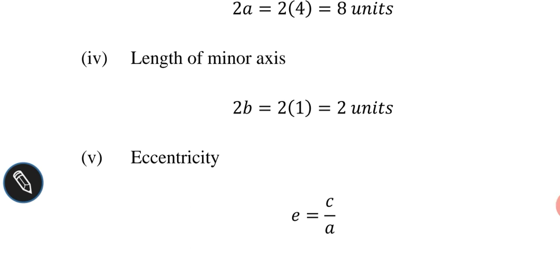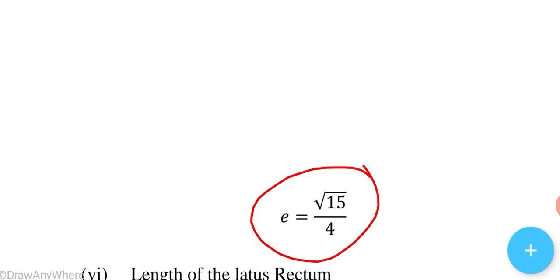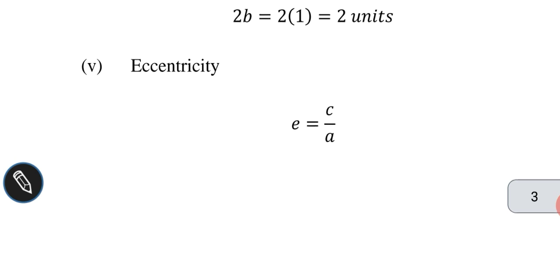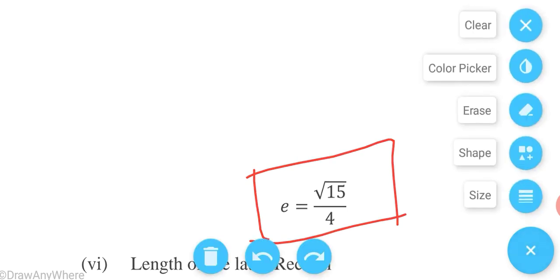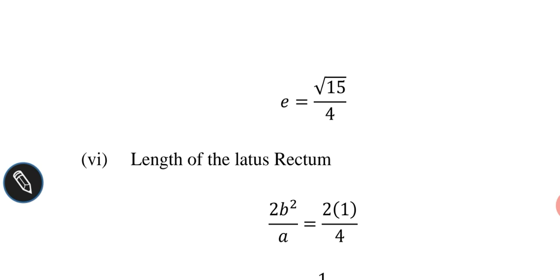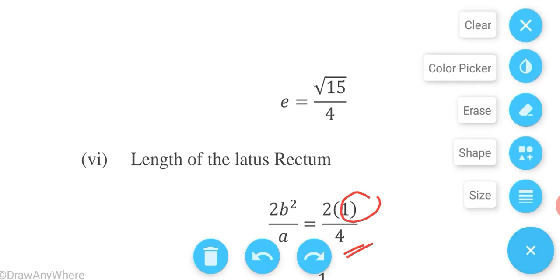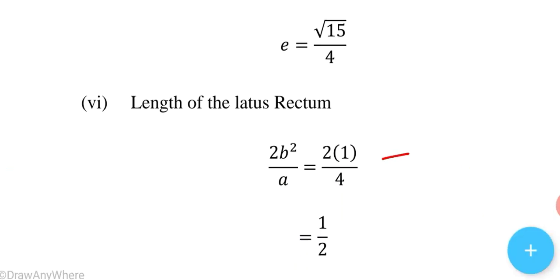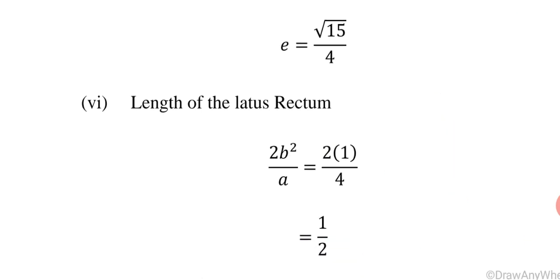The eccentricity is e = c/a. Note that we do not use ± for eccentricity. So e = √15/4. The length of the latus rectum for an ellipse is 2b²/a = 2 × 1 / 4 = 2/4 = 1/2 units.